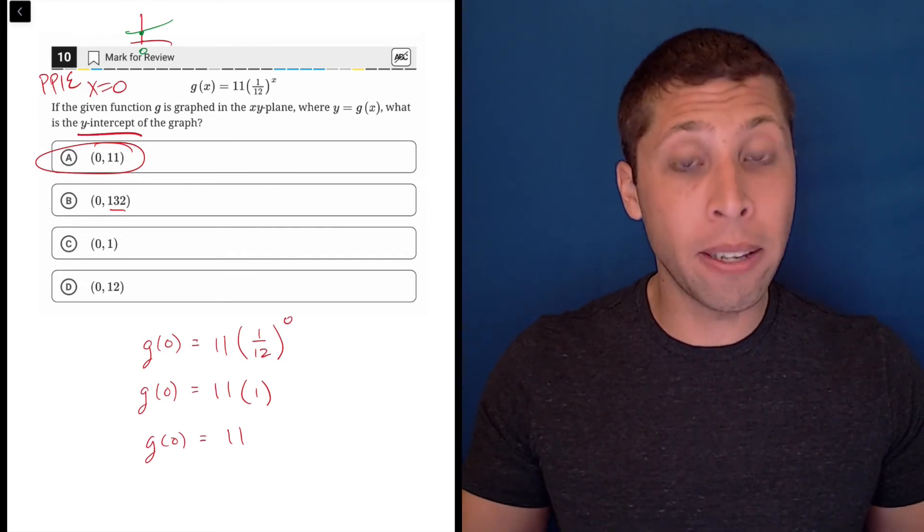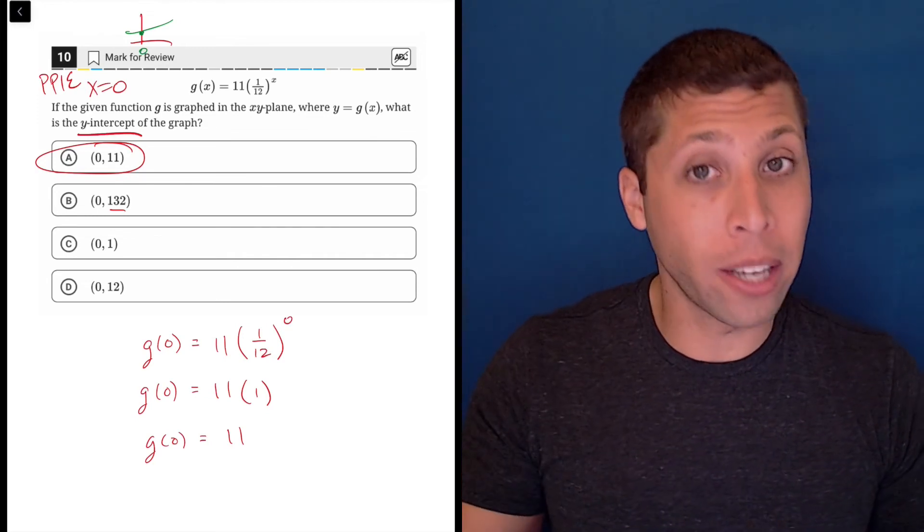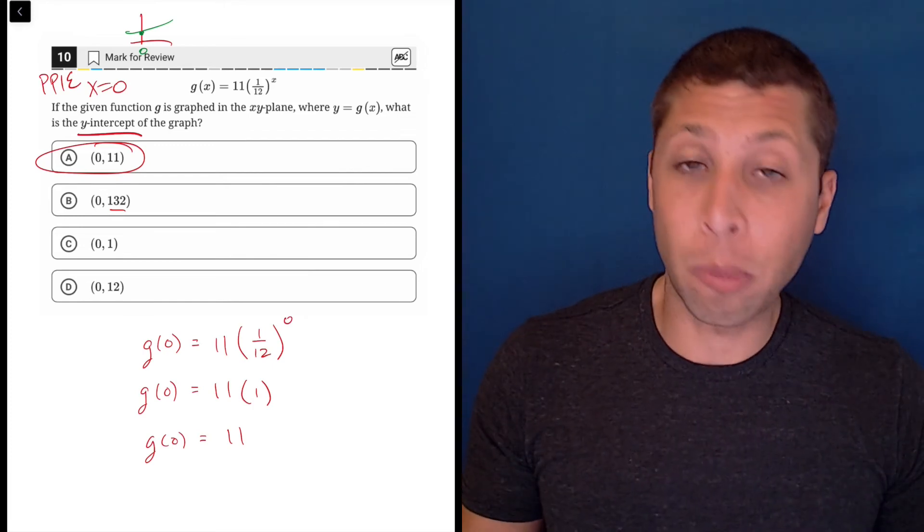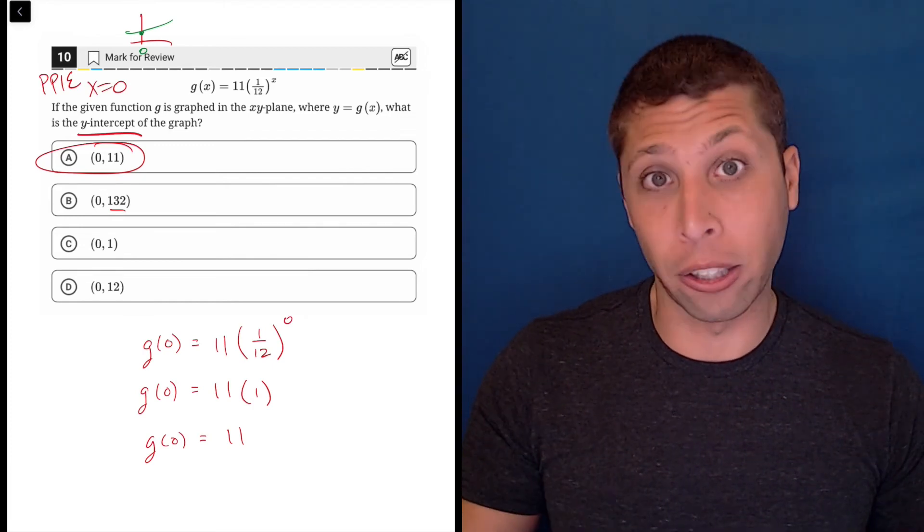Again, you could graph it. You probably would have seen very quickly that (0, 11) was the y-intercept, but this algebra is essential. So no real excuse here—you've got to learn that.